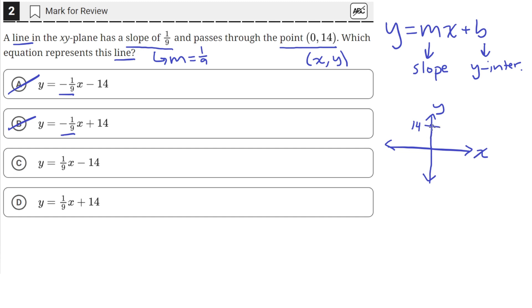That means the y-intercept, where the function crosses the y-axis, is at the point (0, 14). So it would look something like this, the line. That means our y-intercept should be a value of positive 14.